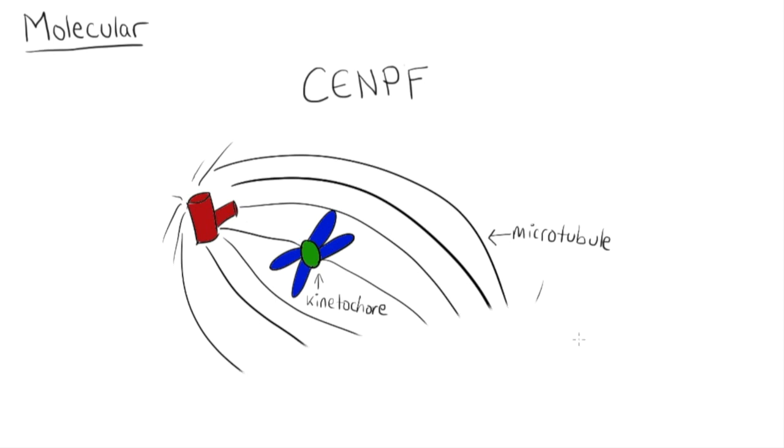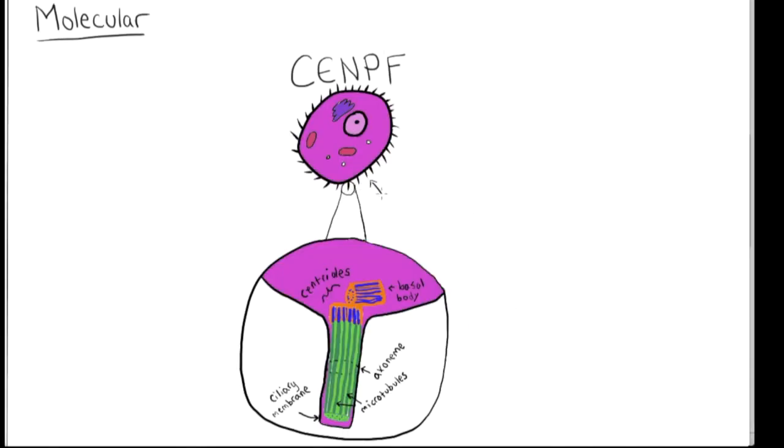CENPF is also important for the development and function of cilia, a type of elongated cellular appendage which facilitates the movement or brushing of particles, including cells or molecules. In the embryo, cilia are important for proper alignment, placement, and structure of organs.